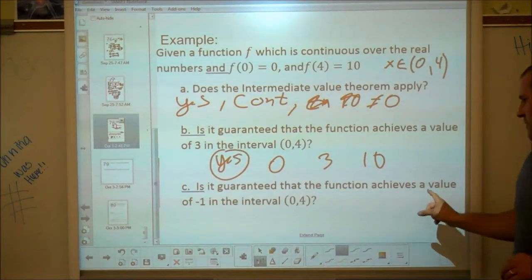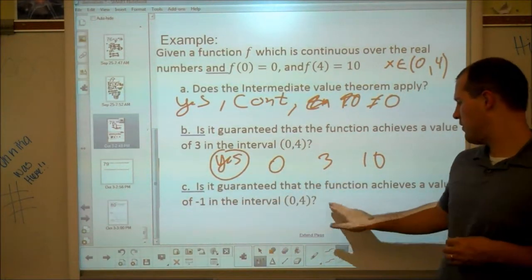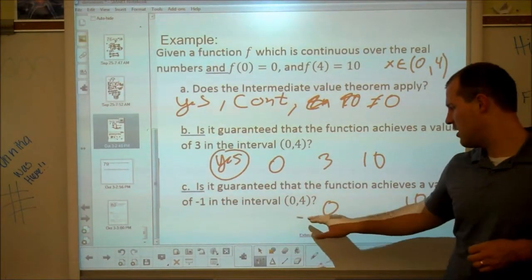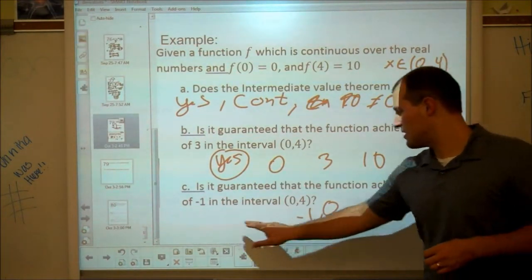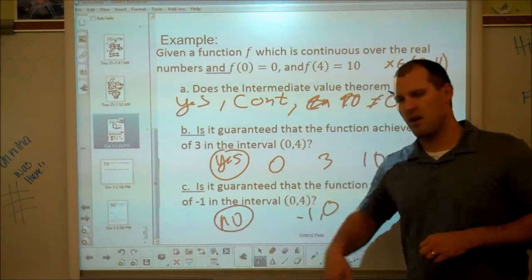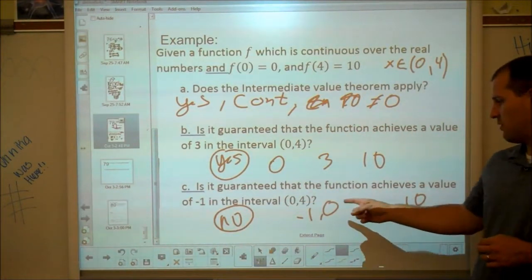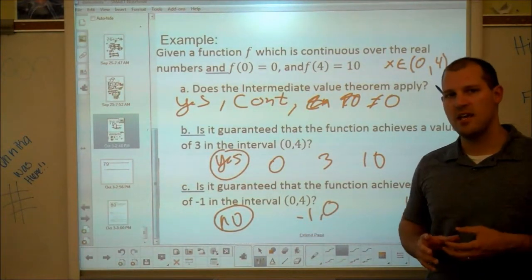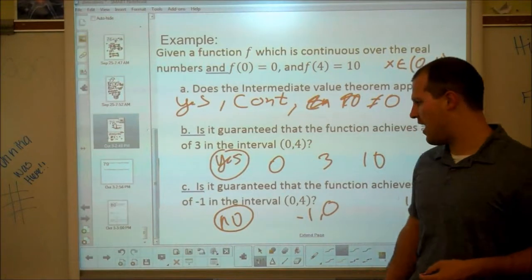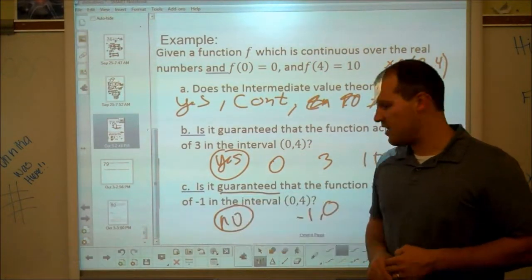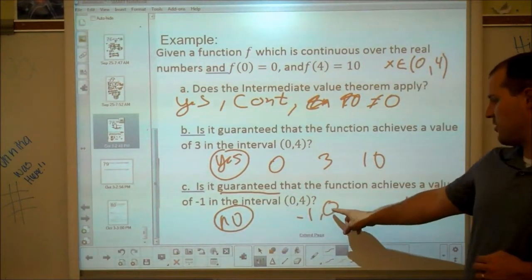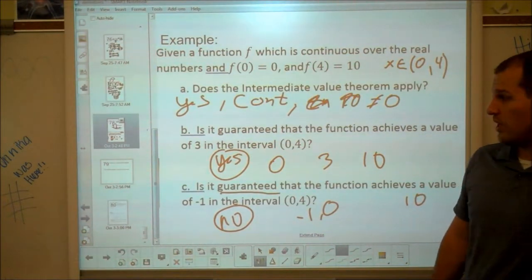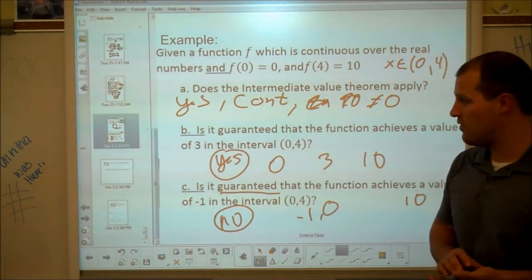Part C, is it guaranteed that the function achieves a value of negative 1? No. We have a 0, we have a 10. Is it guaranteed that negative 1 will be achieved? No, because it's outside the interval. Don't get too excited though. Is it possible that it achieved negative 1? It is. All we're saying is we don't know if it did or not. It's not guaranteed. For all we know, the function started at 0, decreased, went down to negative 1, and then came back up to negative 10. We don't know. So that's a basic overview of the intermediate value theorem.